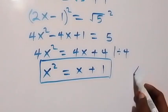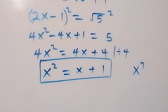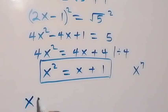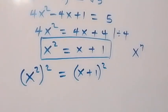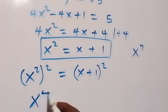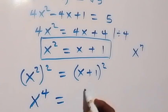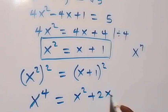Since we need x to the power 7, let's square both sides of x squared equals x plus 1. That gives x to the power 4 equals (x plus 1) squared, which expands to x squared plus 2x plus 1.